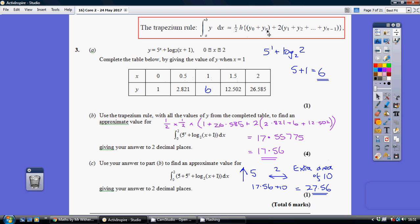Y naught and Yn are our first and last Y values. So that's 1 and 26.585. And this bit here just means we need two lots of all the other Y values. So here we are. So we've got a half times a half times one lot of the first and the last plus two lots of these three values here. Pop that all into your calculator. You get this, which rounds to 17.56 to two decimal places.